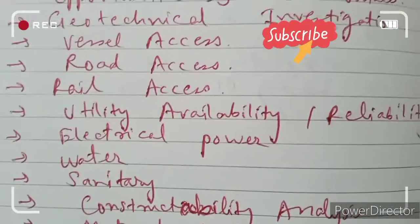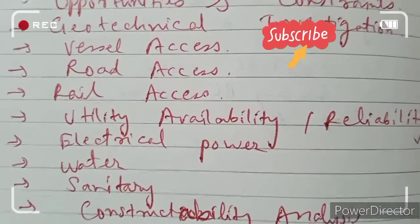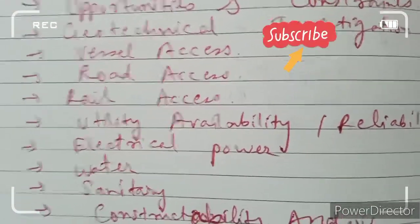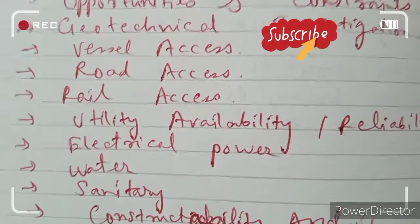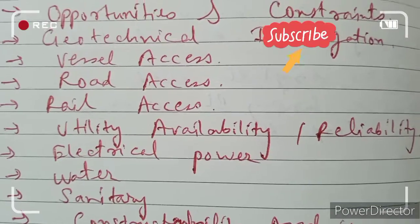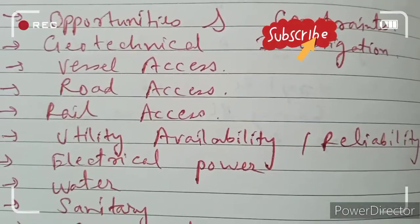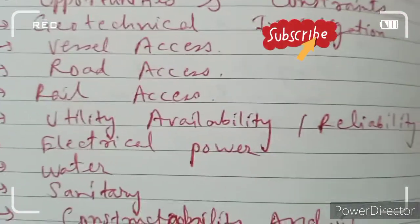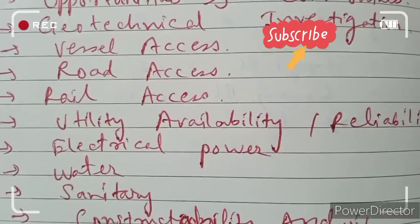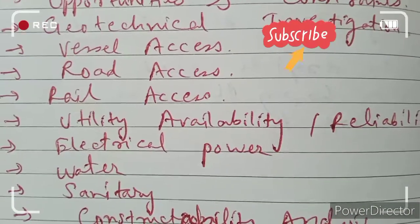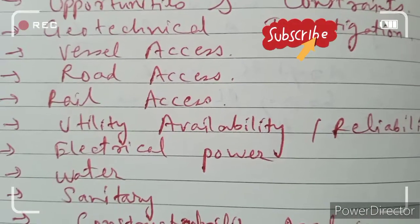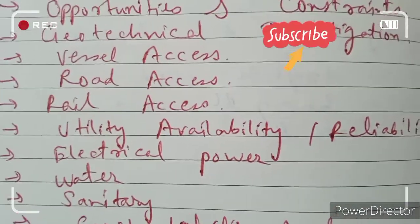Water and sanitary facilities are also main factors affecting new seaport development. Water is required at the port in abundance and resources should be developed at the port site. Sanitary facilities are needed for the convenience of the people working there.